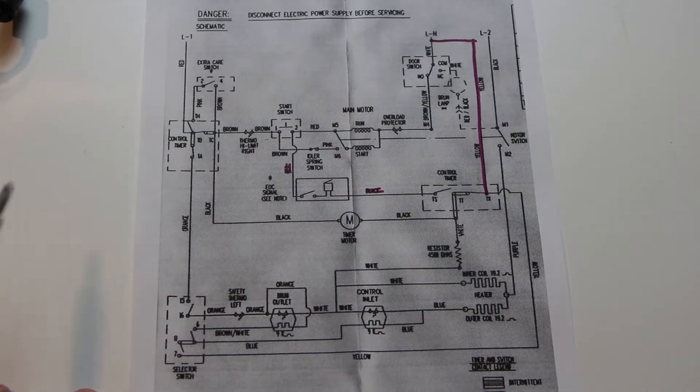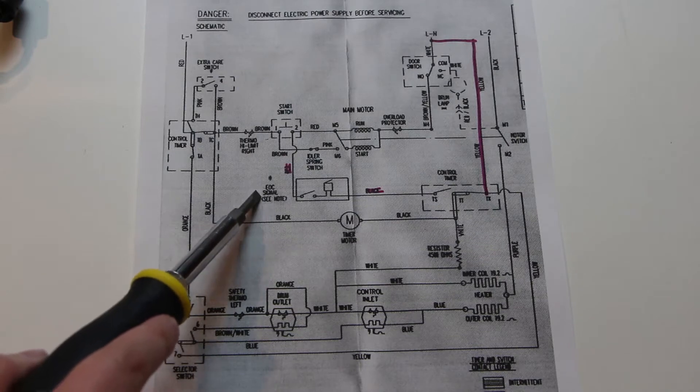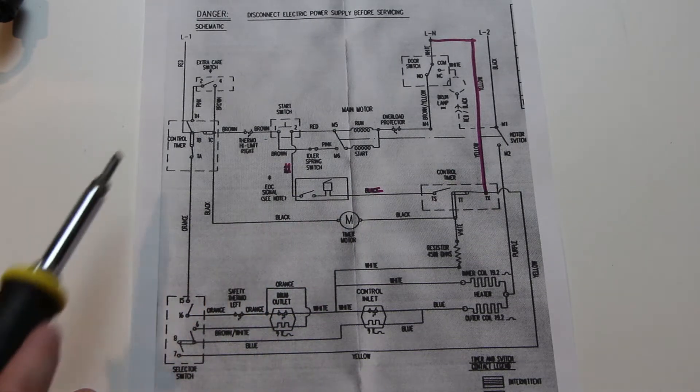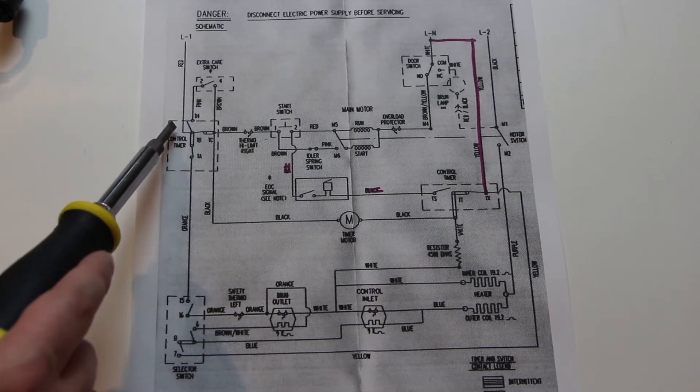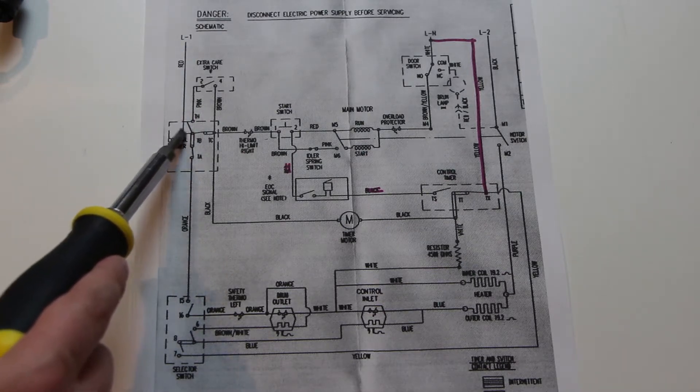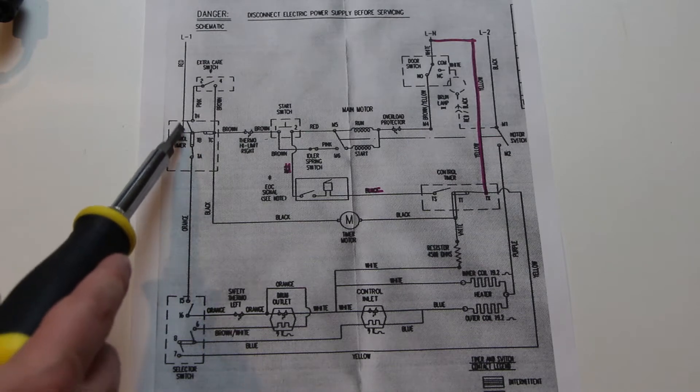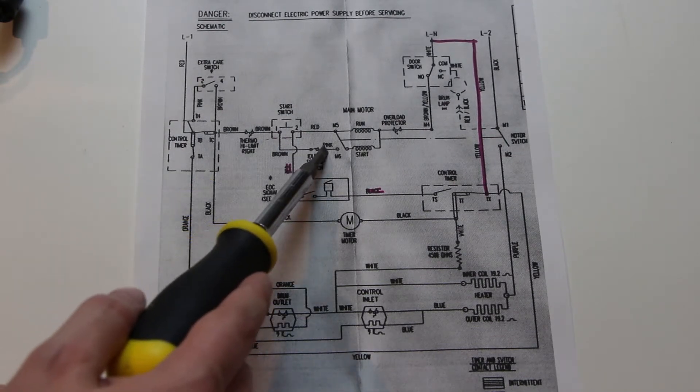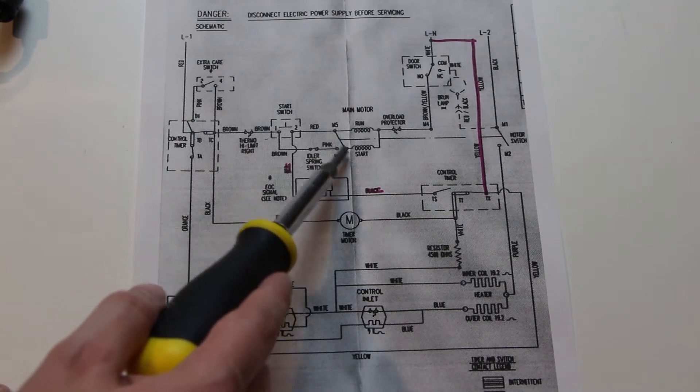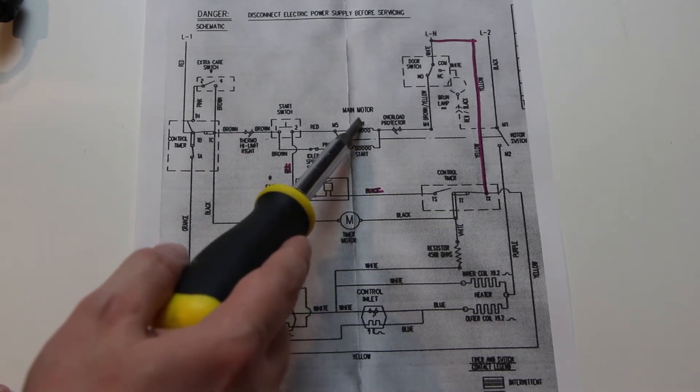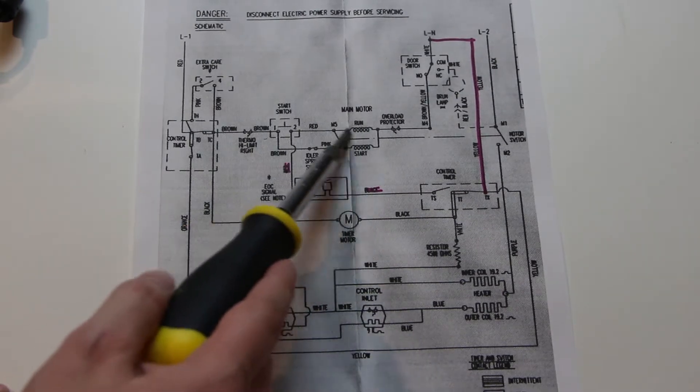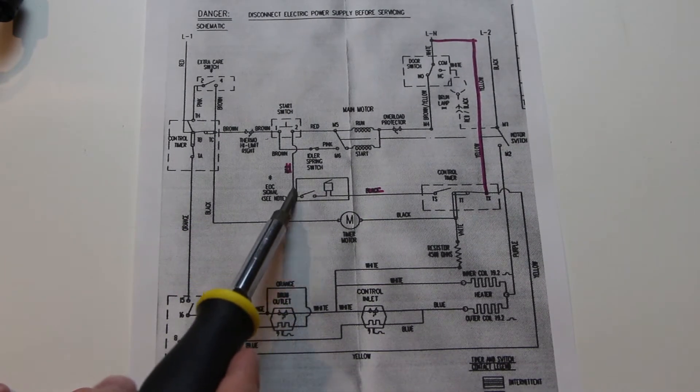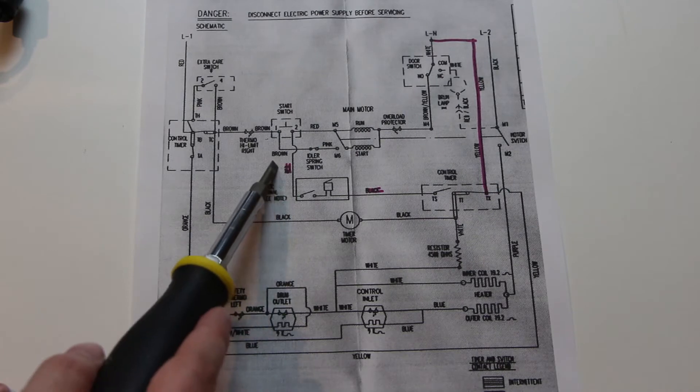The part that I'm looking to replace is this end of cycle signal, that's the buzzer that annoys the crap out of me. It looks like coming in from leg one, when the control timer has this energized, the start switch going around that way keeping it running, disconnecting the start coil. It will come back and bring power to the hot side of the buzzer, that's going to be the red wire.